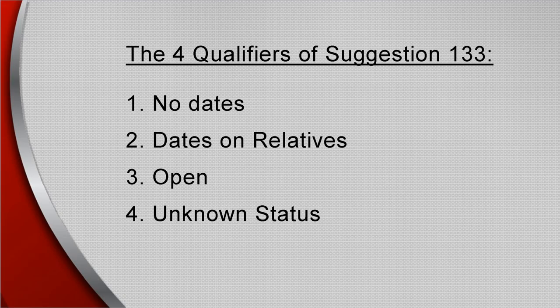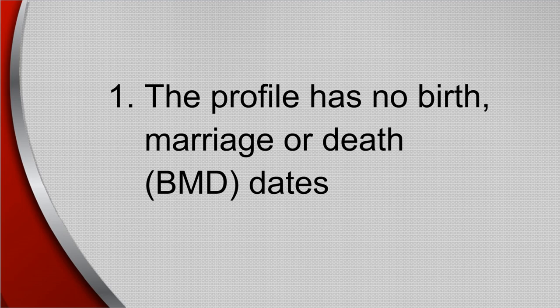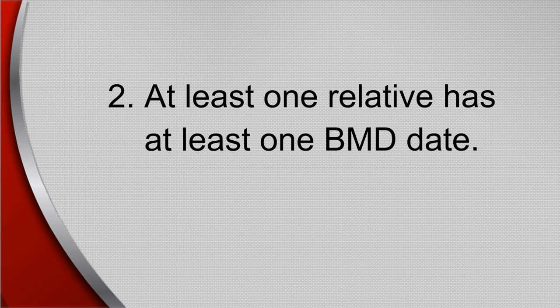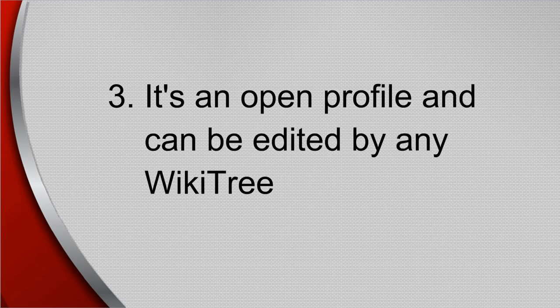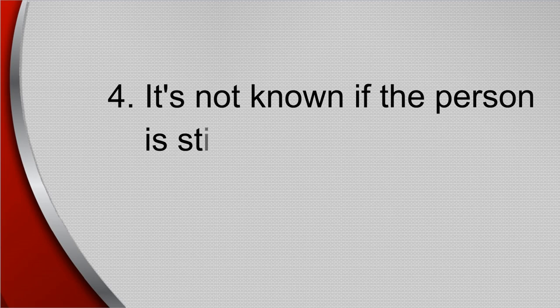Let's take a moment to discuss the four qualifiers of this suggestion. 1. No Dates means the profile has no birth, marriage, or death (BMD) dates. 2. Dates on Relatives means at least one relative has at least one BMD date. 3. Open means it's an open profile and can be edited by any WikiTree member who has signed the honor code and, if applicable, has the correct batch, i.e. pre-1700 or pre-1500 for profiles in those date ranges. 4. Unknown Status means it's not known if the person is still living.